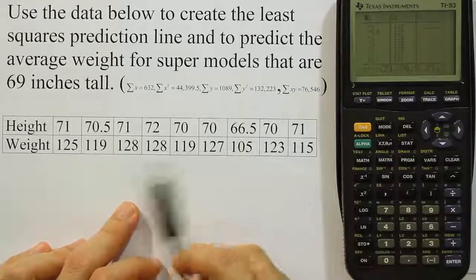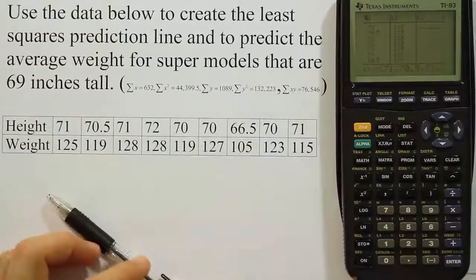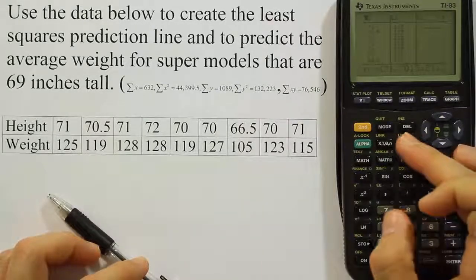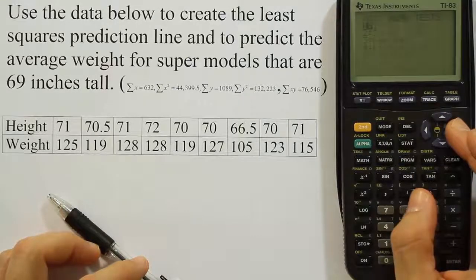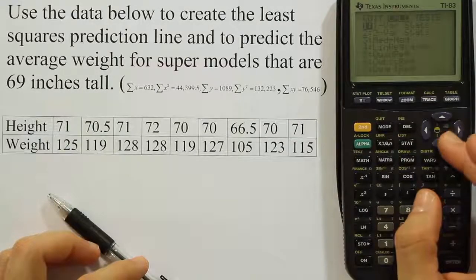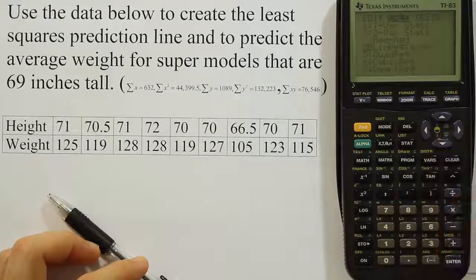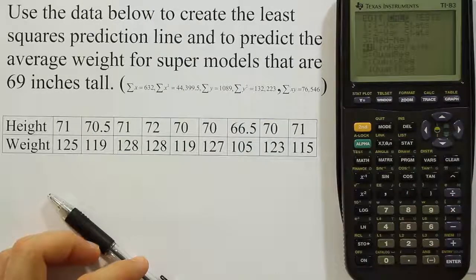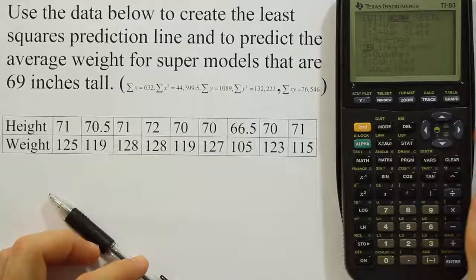Now that they're both in my calculator, the heights in L1, the weights in L2, I'm going to press the stat key. I'm going to arrow over to where it says calculate, and then down at the fourth line here, number four, it says linreg, that's linear regression, and it says ax plus b.